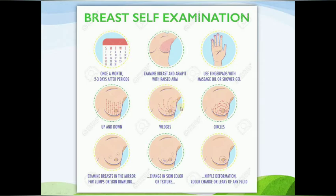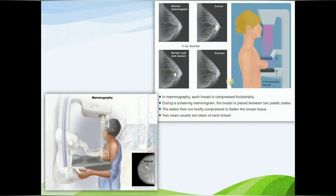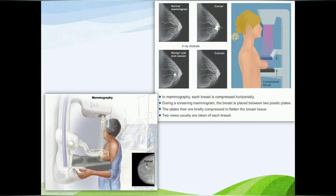This is a picture of a mammogram. In mammography, each breast is compressed horizontally. During the screening mammogram, the breast is placed between two plastic plates, which are then briefly compressed to flatten the breast tissue. Two views are usually taken from each breast — a craniocaudal and a mediolateral view. You can see the mammogram pictures; the cancer is seen on a mammogram like this.